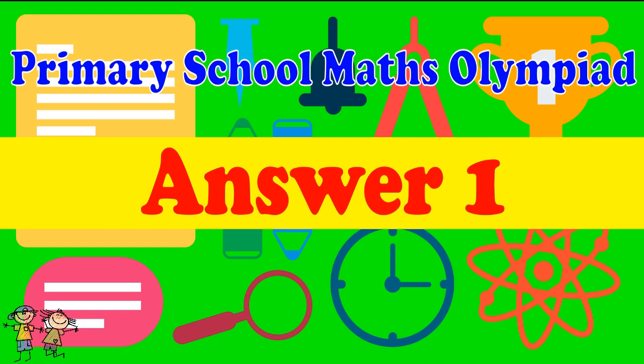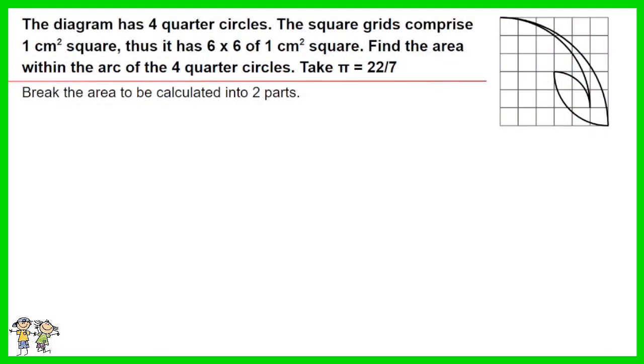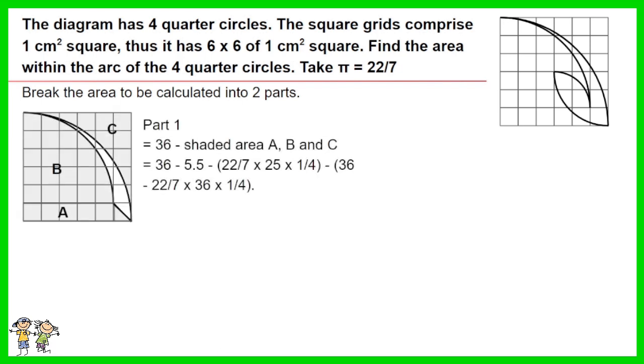Answer for question 1: Freeze of calculation. Break the area to be calculated into two parts. Part 1 equals 36 minus shaded area A, B, and C. Work out the equation. You have 3 and 3 over 14.